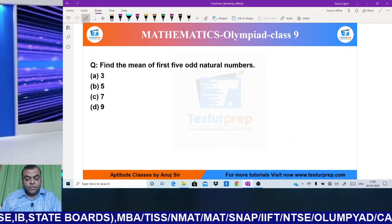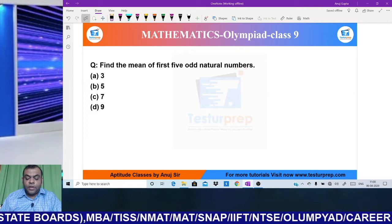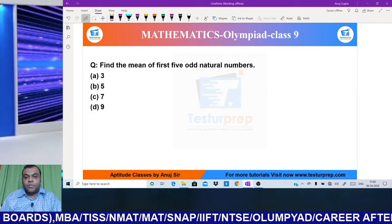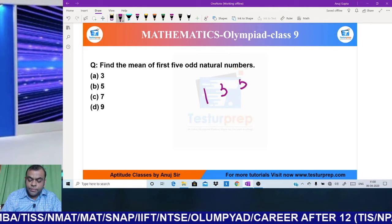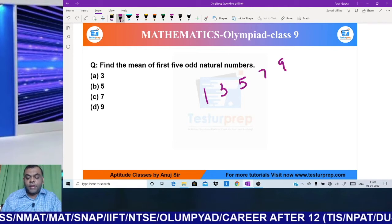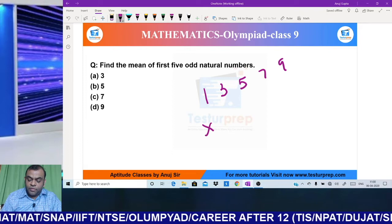My next question says: find the mean of first five odd natural numbers. First five odd natural numbers are 1, 3, 5, 7, 9.